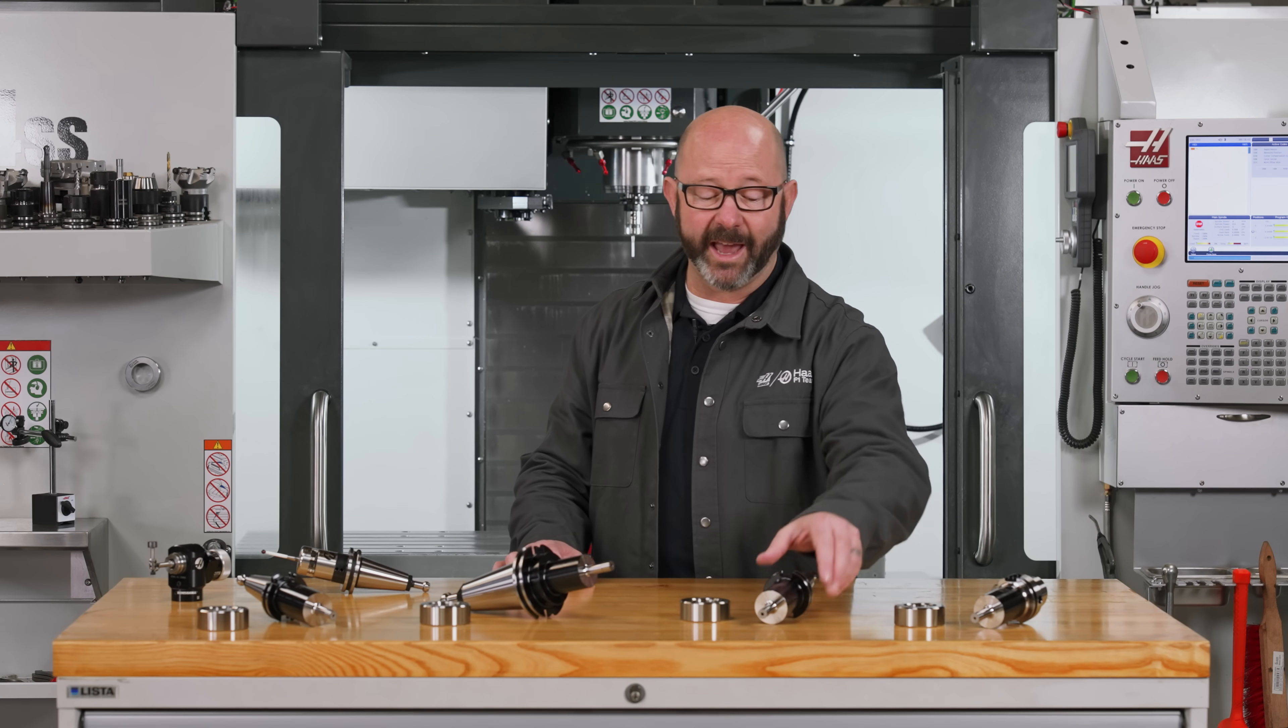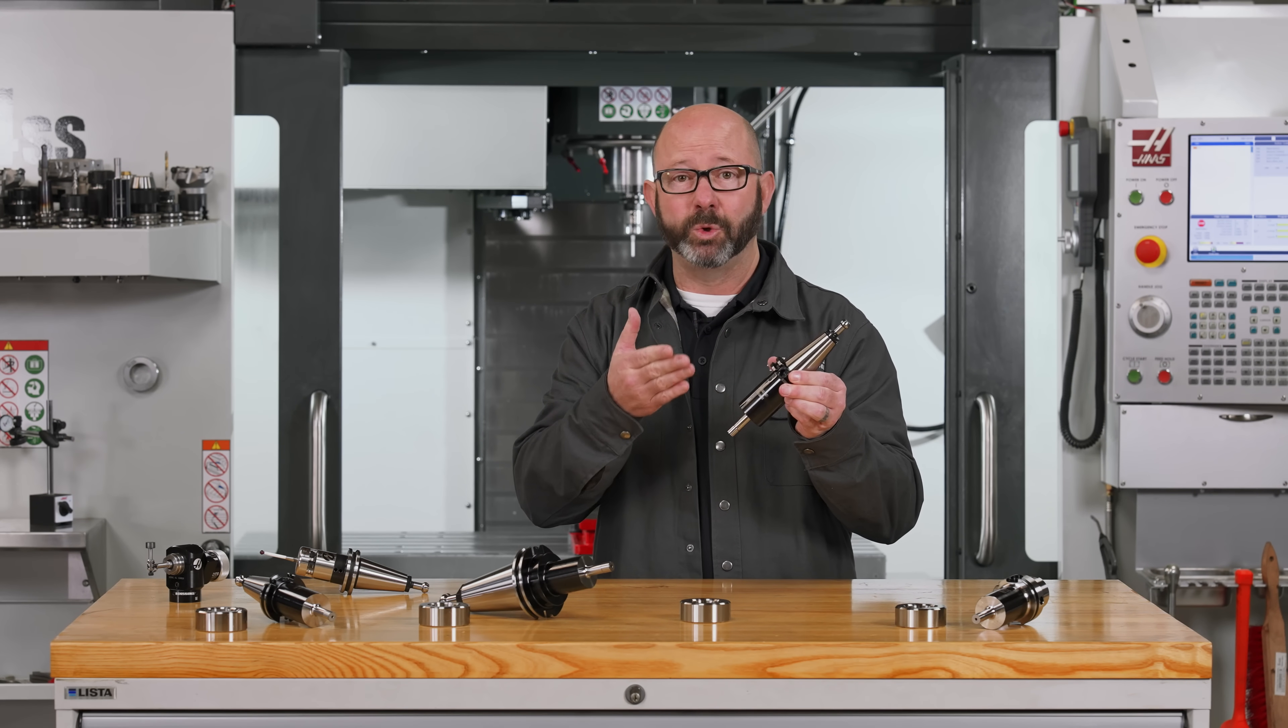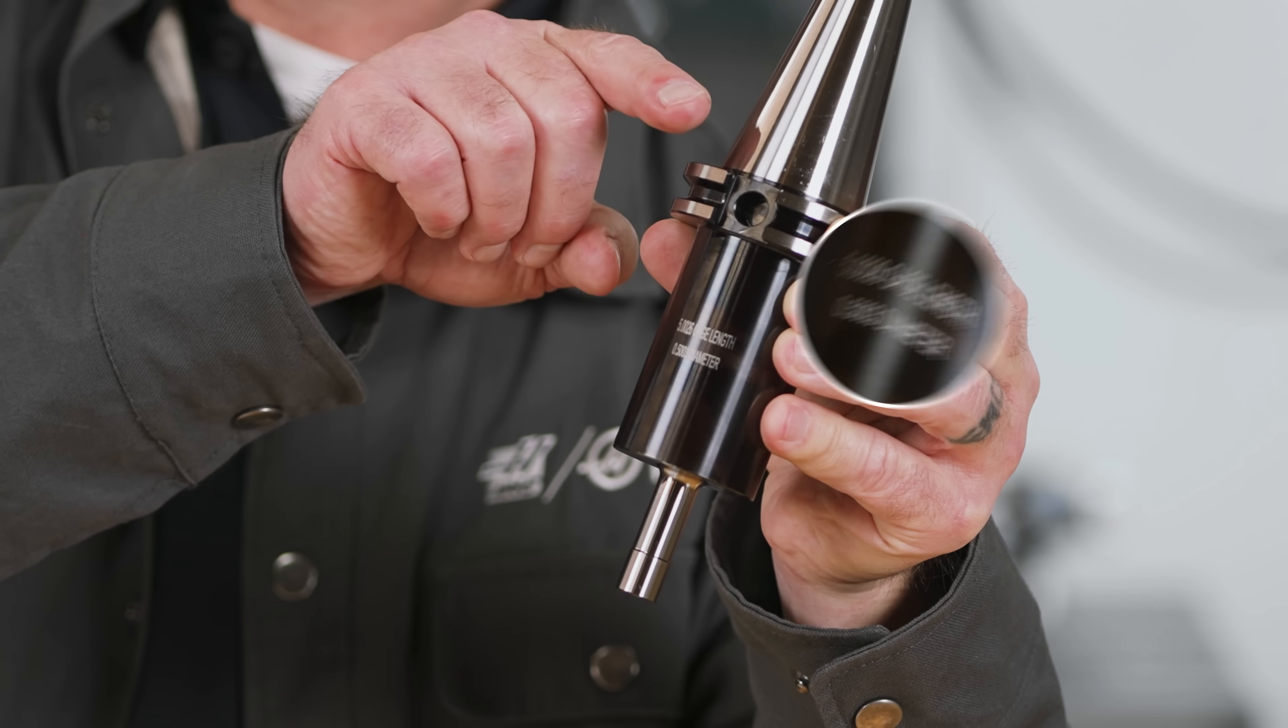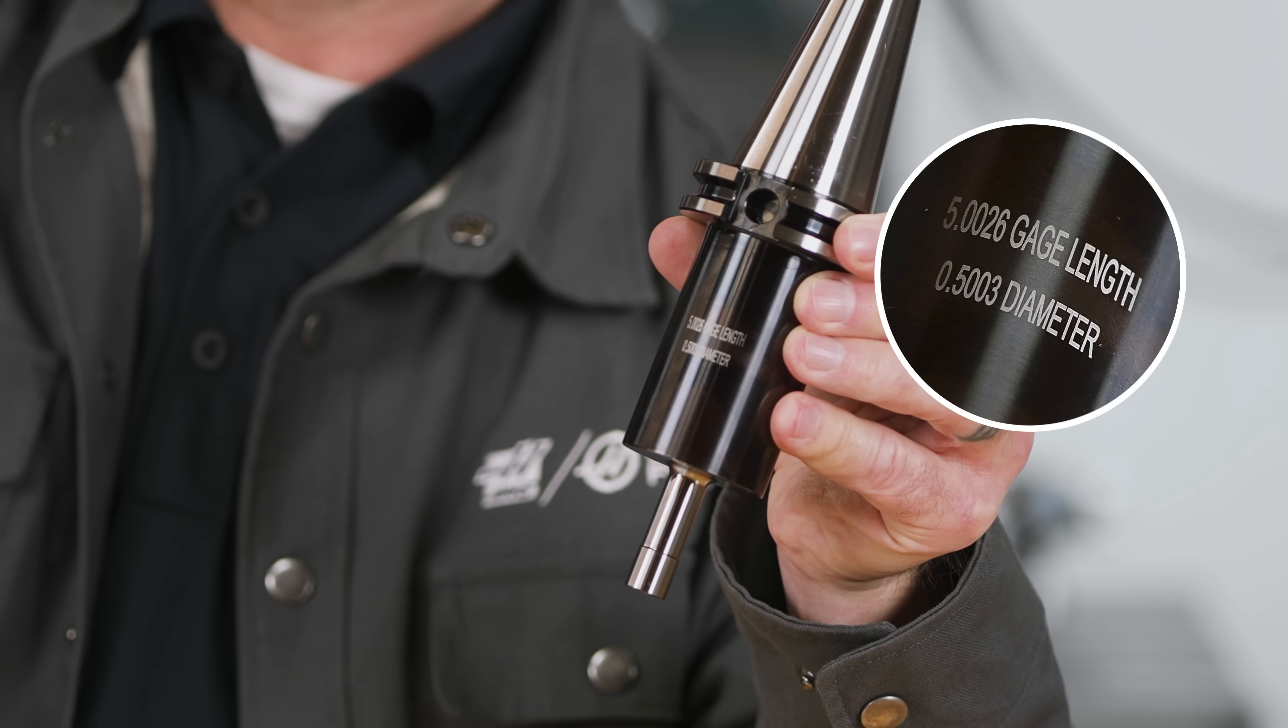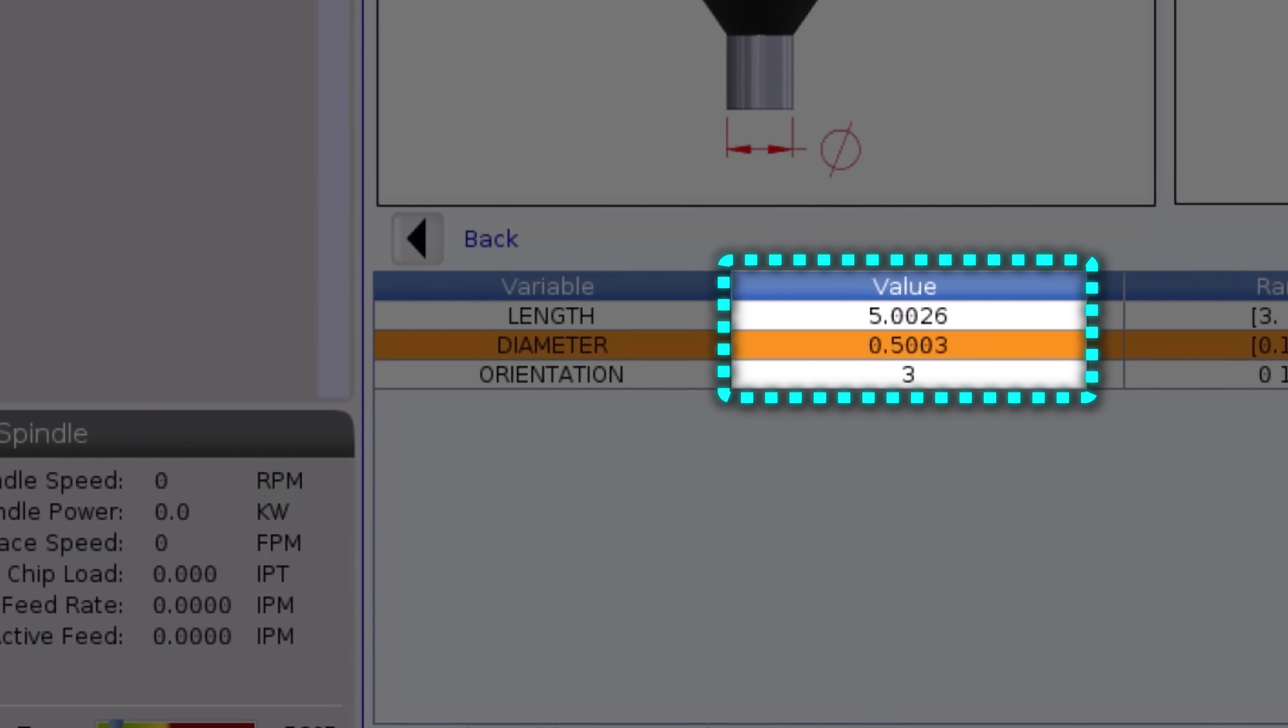Now this gauge line is really hard to measure on a tool, but we don't have to because we have a test bar that has the gauge length written right on it. And we can use this tool to calibrate our entire probing system.